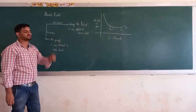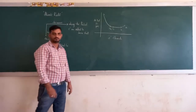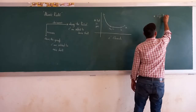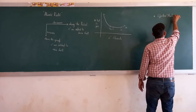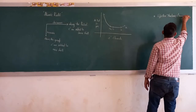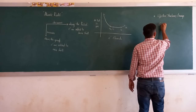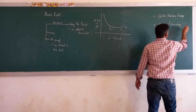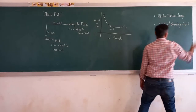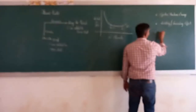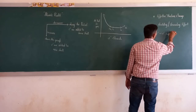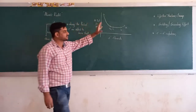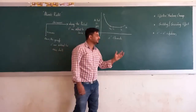Let us understand why this type of trend occurs. Atomic radii basically depends upon three parameters. The first parameter is effective nuclear charge. The second parameter is shielding effect, also called screening effect. The third parameter is electron-electron repulsion. When you consider any atom, all three parameters are working — effective nuclear charge, shielding effect, and electron-electron repulsion — but one will have the edge over the others.